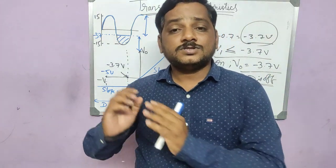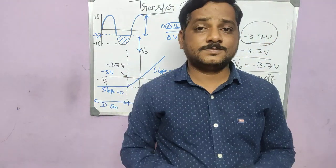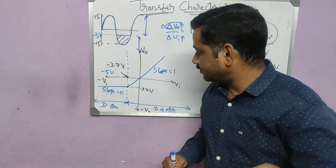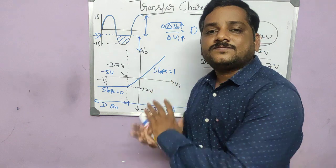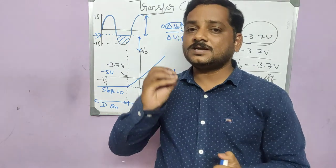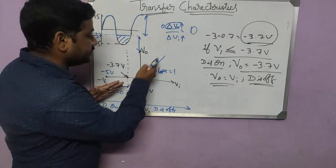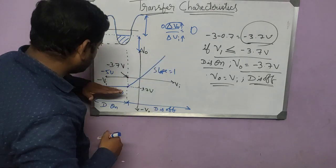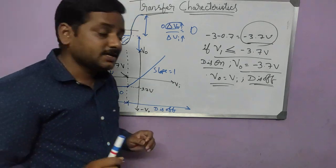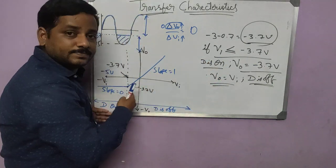Now let's cover the last concept — how to read the transfer characteristics. By looking at this graph, we can identify what kind of clipper circuit it is. In our example we have a slope in the positive input region but a constant (clipping) at the negative side, so we can understand that it is clipping at the negative side. This is a negative clipper.